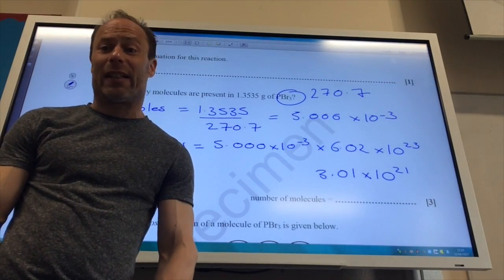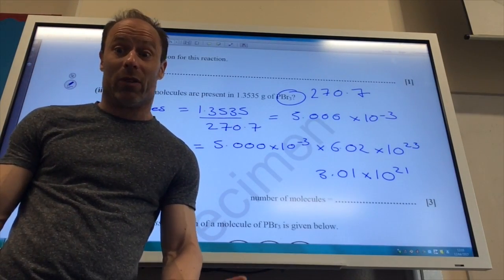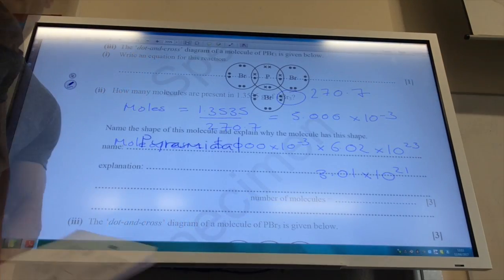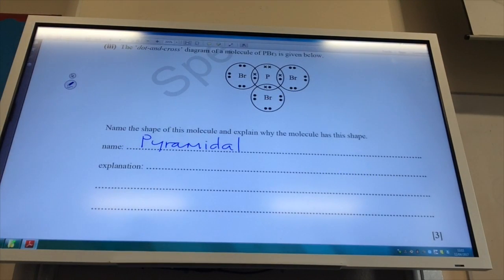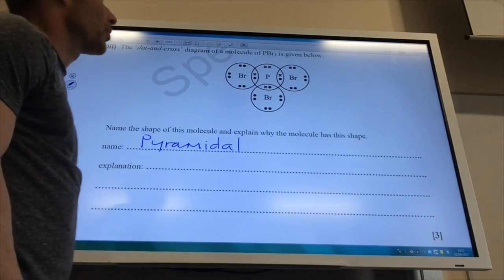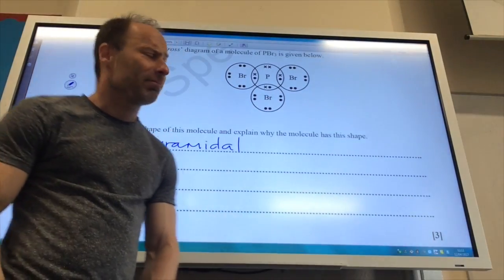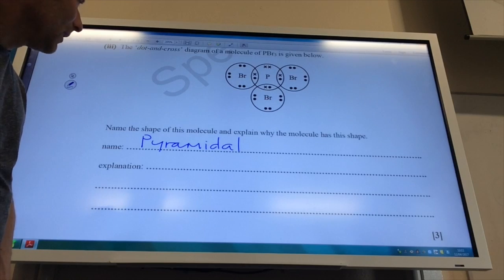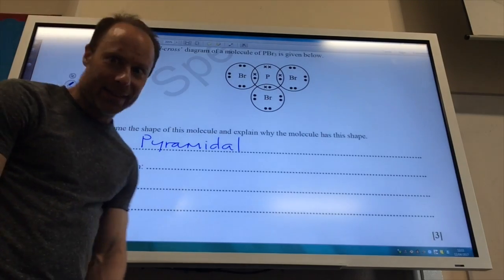It's always going to be a big number because it's the number of molecules. If you're getting a tiny number, something's gone horribly wrong. It's got to be a big number. So this is a common question that comes up again. They've given me the dot and cross diagram of phosphorus tribromide, which is rather lovely of them.